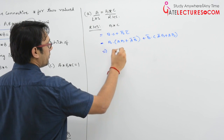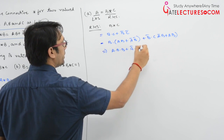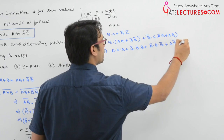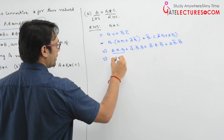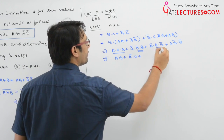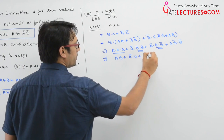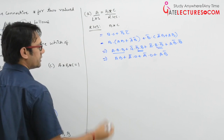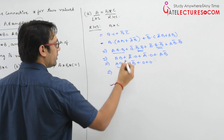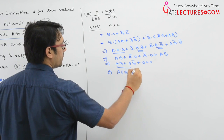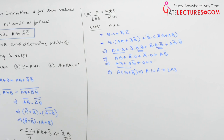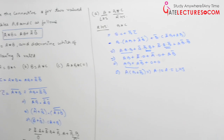Expanding the brackets: a·b·b + a'·b'·b + a'·b·b' + a·b'·b'. Since b'·b = 0 and b·b' = 0, this simplifies to ab + 0 + 0 + ab'. Taking a as common: a(b + b') = a·1 = a. This equals the left-hand side, so the first part, a = b★c, is valid.